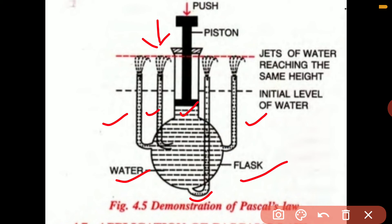The initial level of water in each tube is shown by the dotted black line. The water should be at the same level because water seeks its own level. Now push the piston down into the flask gently. It is observed that jets of water rise out from each tube with the same force, as shown by the red dotted line, reaching the same height shown by the upper dotted colored line. This shows that the pressure applied to the enclosed liquid is transmitted equally in all directions everywhere inside the liquid.